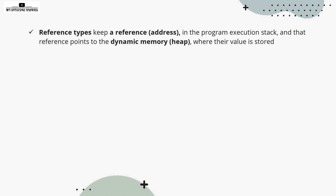Reference types keep a reference or an address in the program execution stack, and that reference points to the dynamic memory called the heap, where the actual value is stored. So for reference types there are basically two memory locations: the execution stack and the heap. In the stack, only the reference or address is stored — the actual value is stored in the heap.